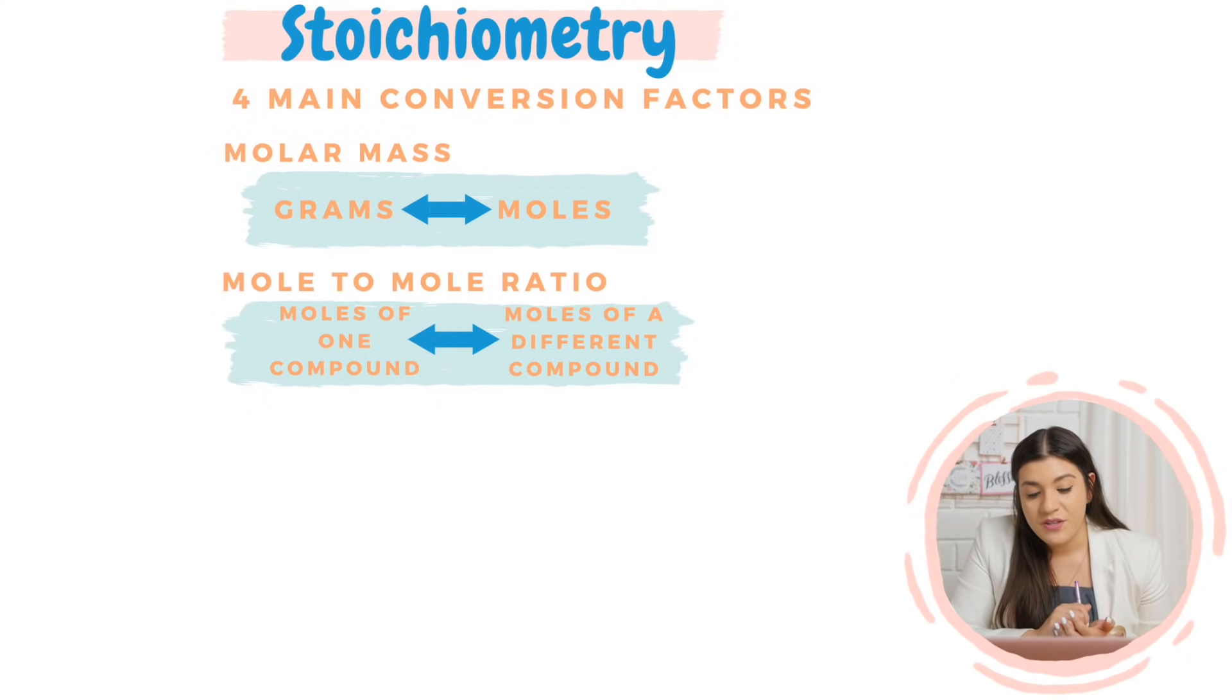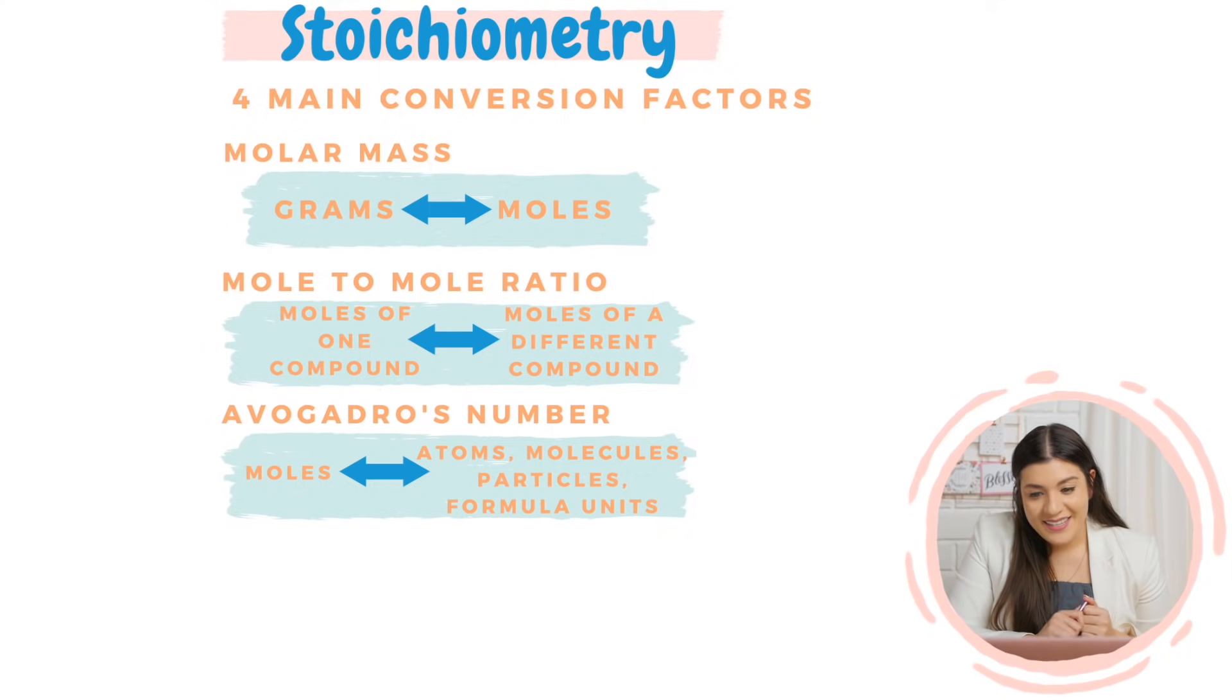The next one was whenever you have to change the compound, that's when you're going to do a mole to mole ratio. So because it goes from moles of one compound to a completely different compound. The next one is Avogadro's number. That one goes from moles to any one of these units, right? Atoms, molecules, particles, formula units, and vice versa.